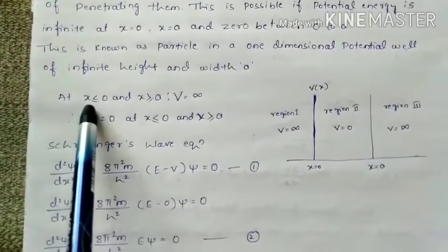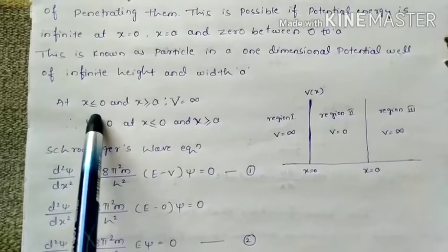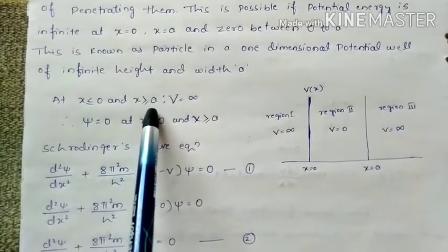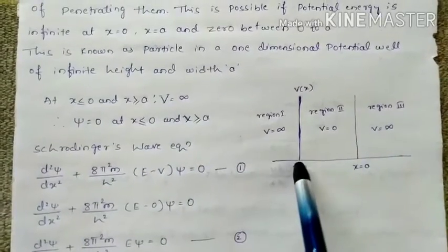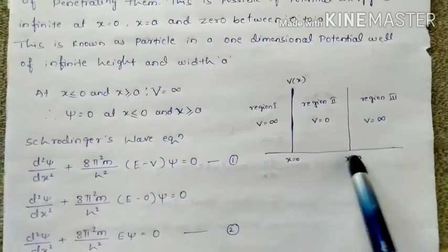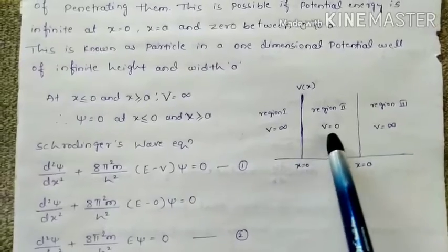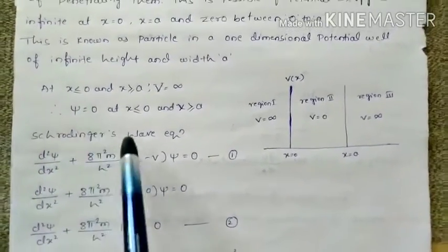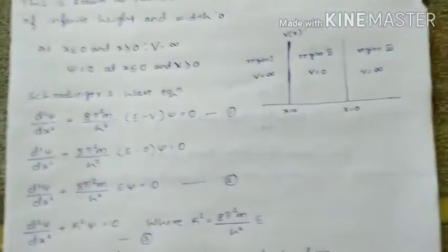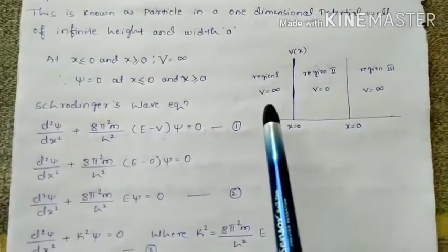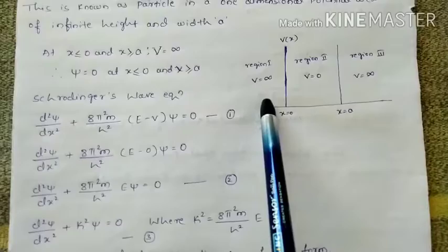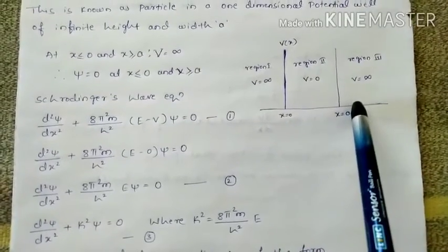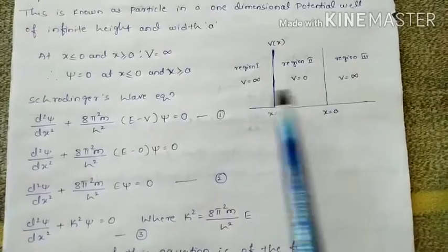Here, at x less than or equal to 0 and x greater than or equal to A, V is infinity. But between the walls, the potential V is equal to 0. Therefore, psi equals 0 at x less than or equal to 0 and x greater than or equal to A, because the particle is not present there.